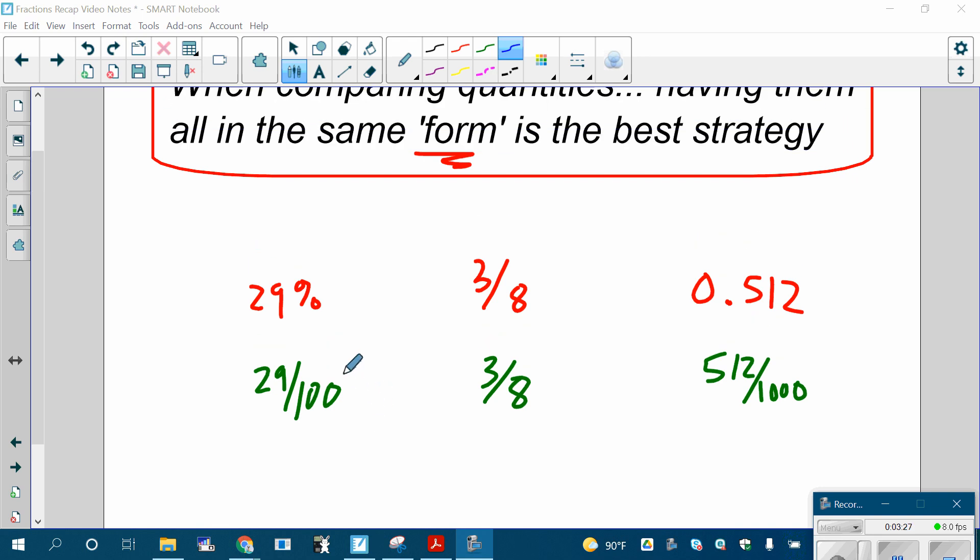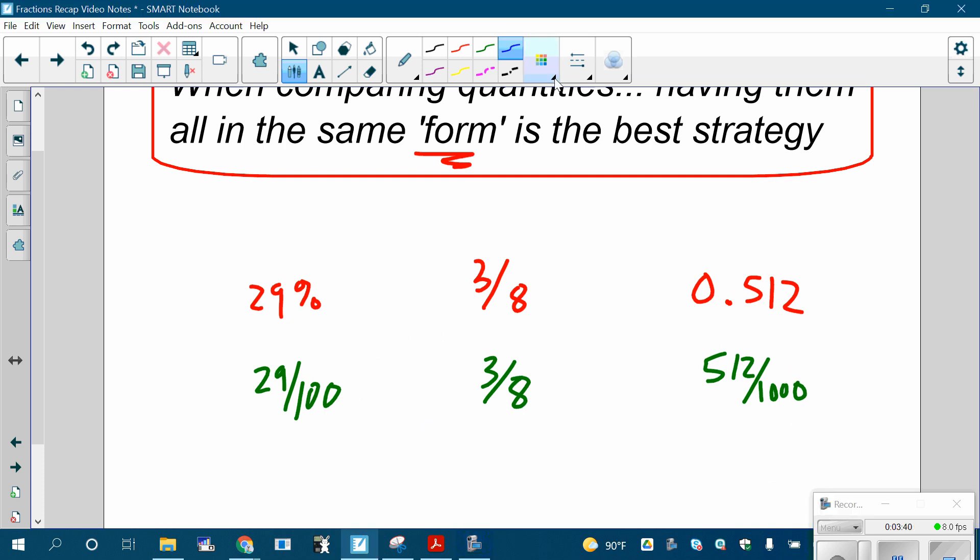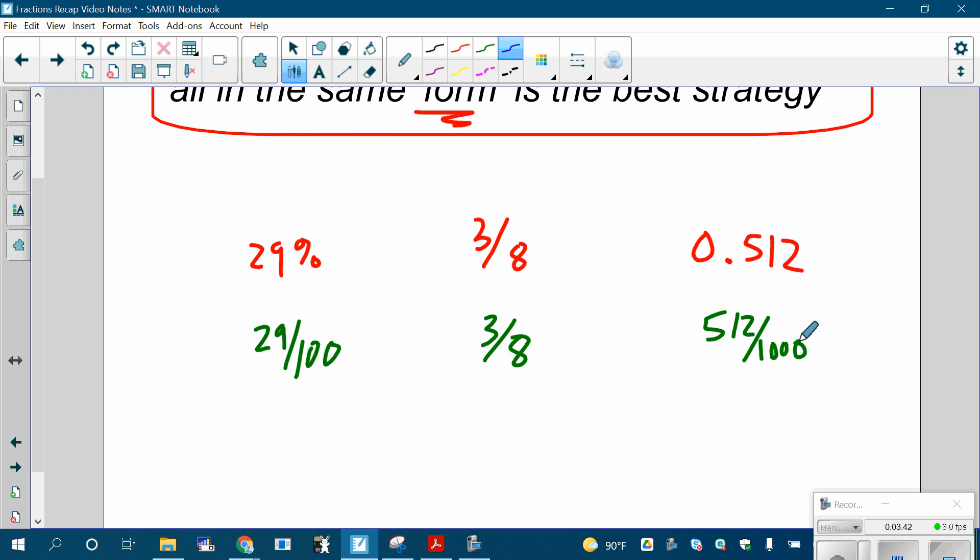So if, real quick, you put them all in fraction form the easiest way, I put 29% is 29 over 100, 3/8 so it's already a fraction, 0.512, I put it as 512 over 1,000. It starts to get my brain thinking about comparing these. Hopefully, you can look at this right away and say this is the only one that's greater than a half. So this is definitely going to be the largest one. When you're comparing these two, there's lots of different approaches here. The problem is the denominators are very different, so it's a little tricky to compare those fractions.